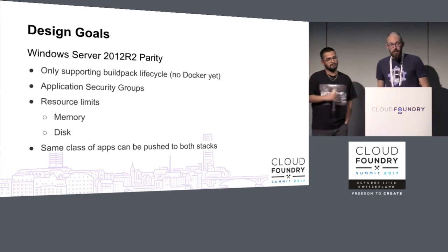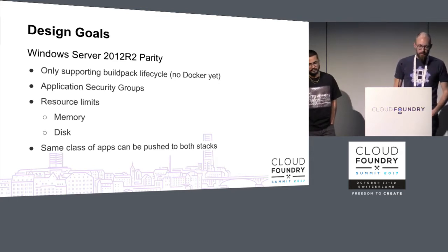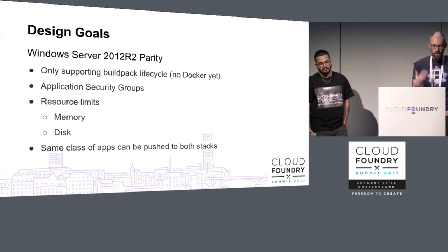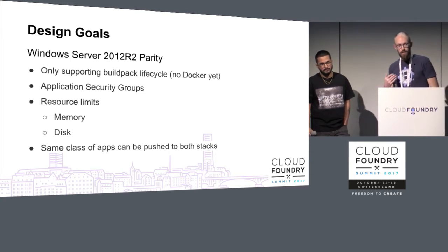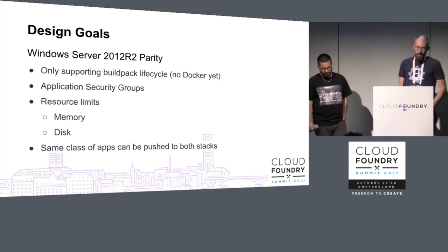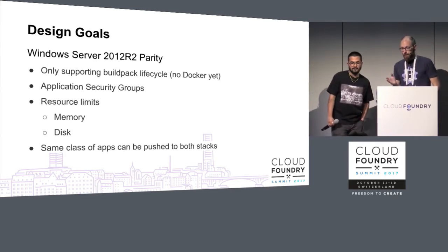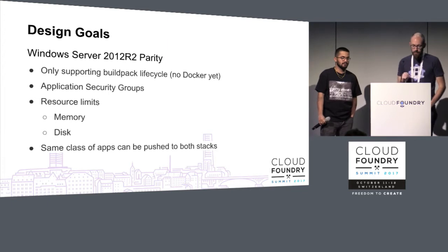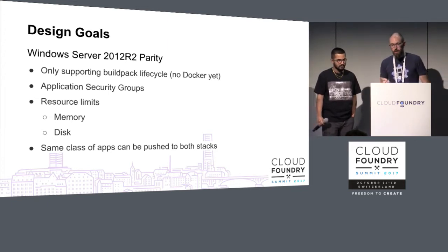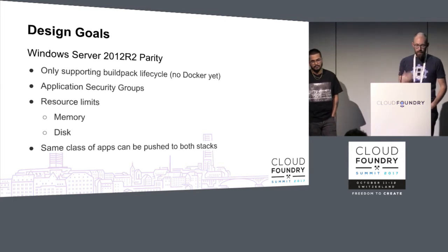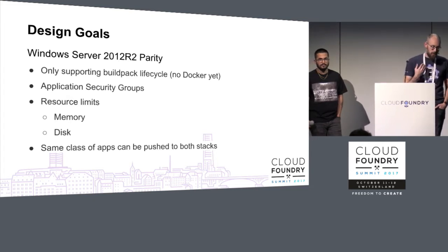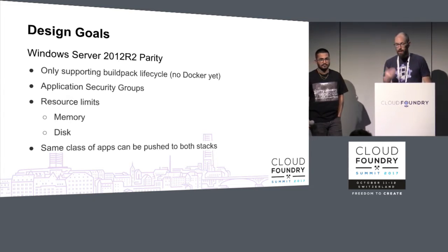What were our design goals when building the 2016 stack? We focused initially on Windows Server 2012 parity — we weren't trying to bring new features, just deliver everything we had before. Initially we're only supporting the buildpack app lifecycle; there's no Docker app lifecycle yet. We support application security groups just like in 2012, currently implemented via Windows firewall rules. We have resource limits for memory and disk, and we're targeting that same class of applications.